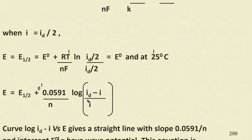In the last class, the polarographic half-wave potential was discussed. The EMF or current can be expressed as: E = E_half + (0.0591/n) × log((id - i)/i). When i equals id/2, then E equals E_half.